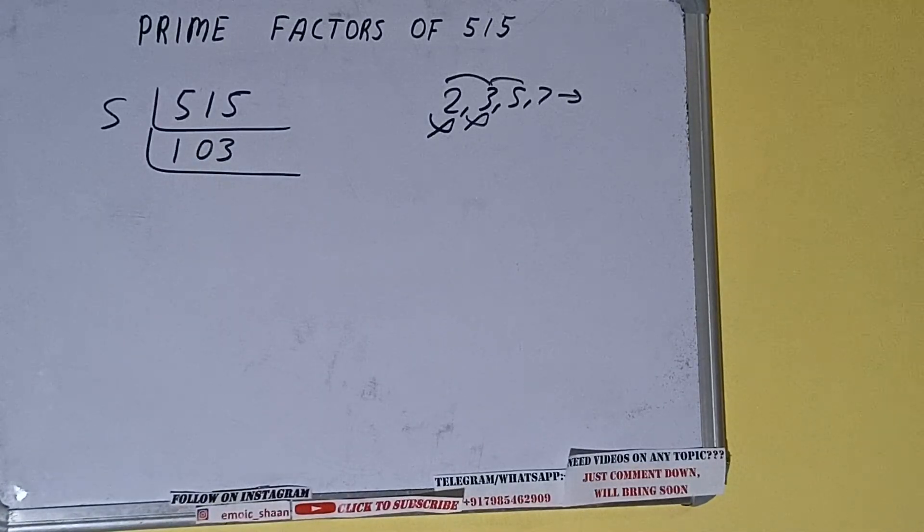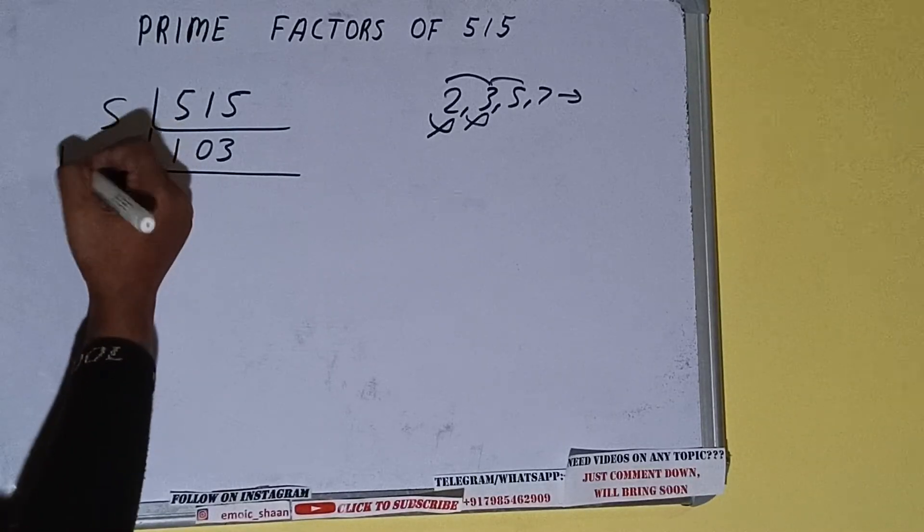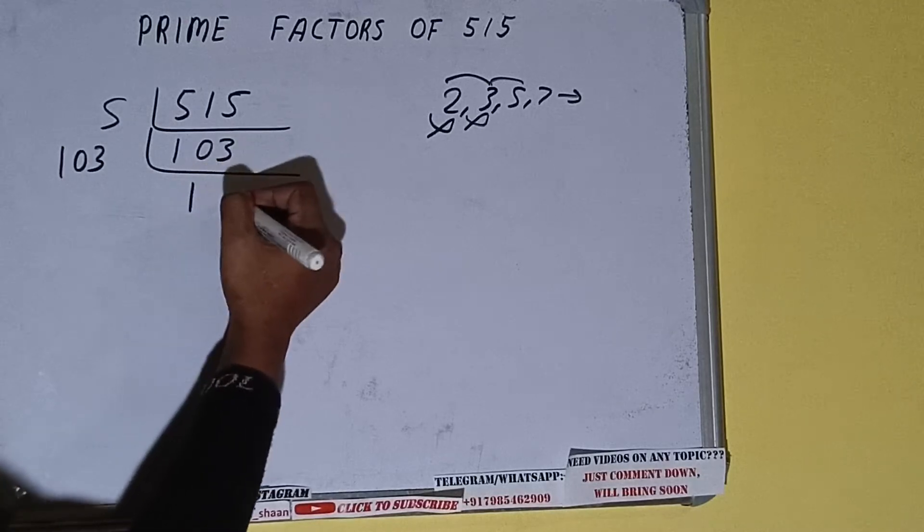And on that, the number 103 is also a prime number, so it is only divisible by itself, that is 103. And once we do so, we'll be getting one. Once we get one, we need to stop.